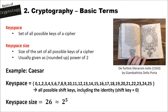There are other important terms we have with cryptography. For instance, the key space. The key space is a set of all possible keys of a cipher. For instance, with the Caesar cipher, the key space are all numbers from 0 to 25 — these are all possible shift values. The identity, that is the shift key equal to 0, is also included in the key space.